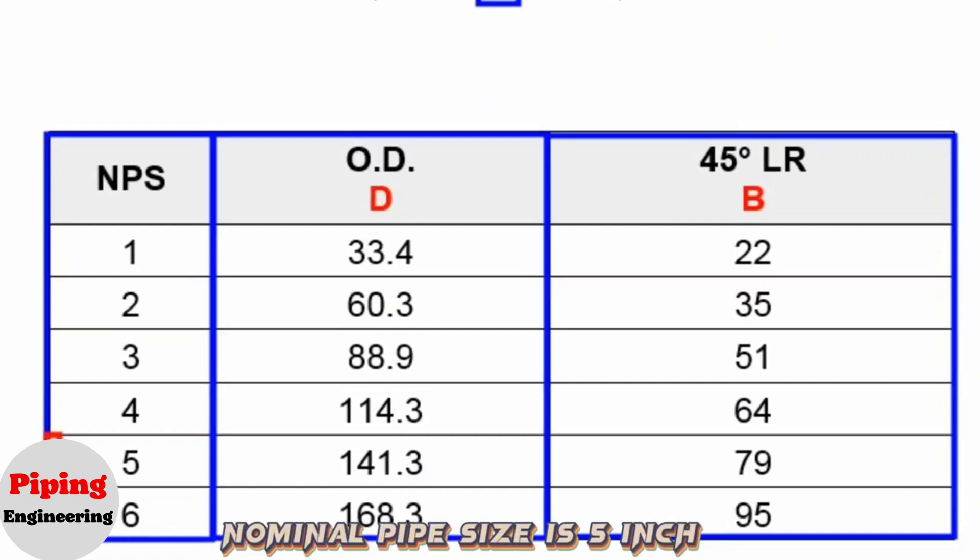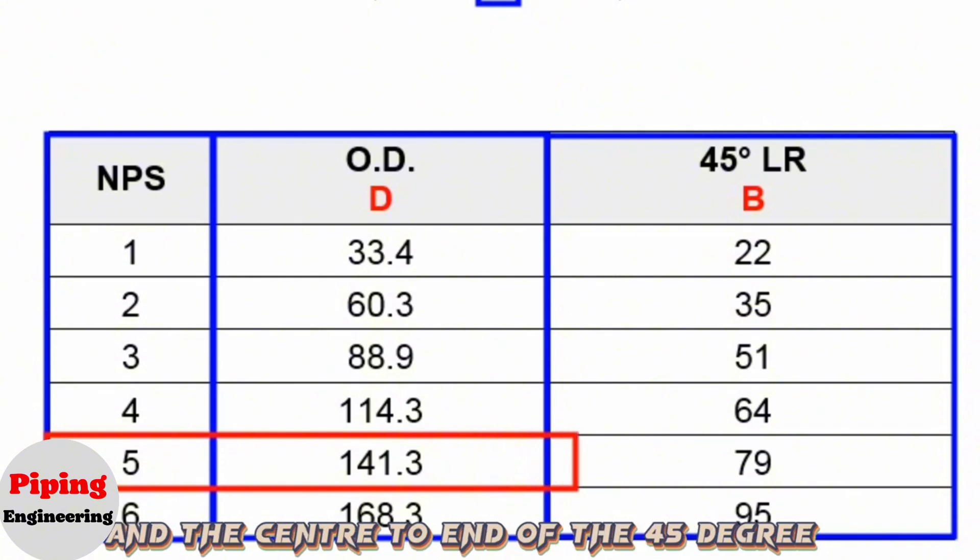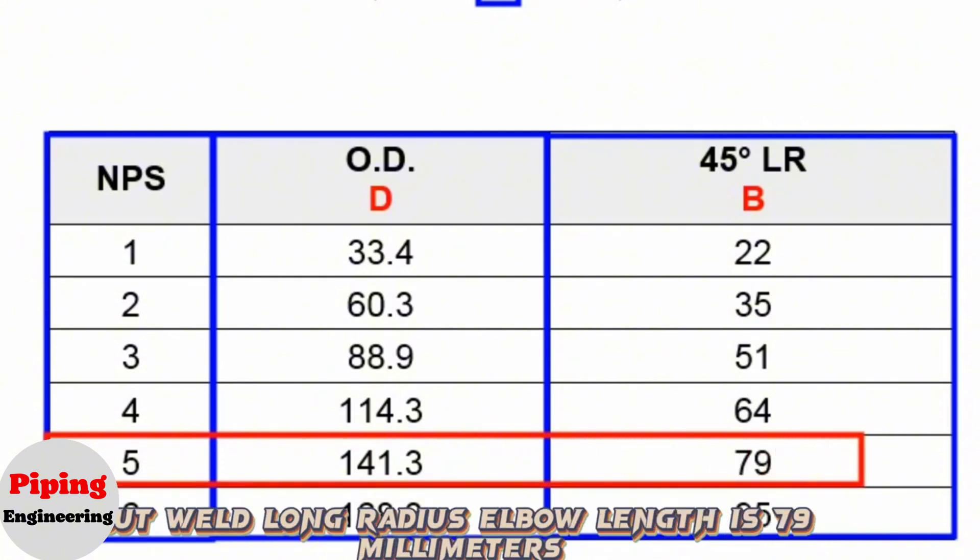We will look at this row: nominal pipe size is 5-inch, outside diameter is 141.3 millimeters, and the center-to-end of the 45-degree butt-weld long radius elbow length is 79 millimeters.